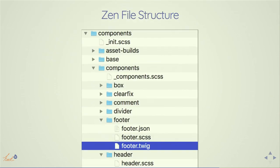We're going to look at Zen for D8, because instead of organizing files by file type — all content in one folder, all fields in one, all views in one — which is very Drupal-y and not component-based, we want components. For example, in Zen the footer is a component, and this is a very different file structure. In the footer folder you have the JSON, the Sass, and the Twig all together in one folder. Before, we had all Sass in one folder, all Twig in one, all JavaScript in one. Now we're grouping things together based on functionality and component. If you need to change something in the footer, you'll probably need to change the JavaScript, Twig, and Sass — and now you can find them all in one place.